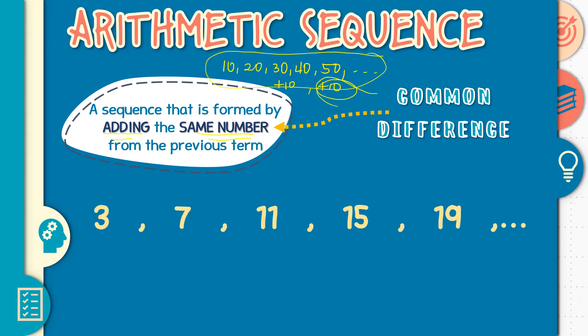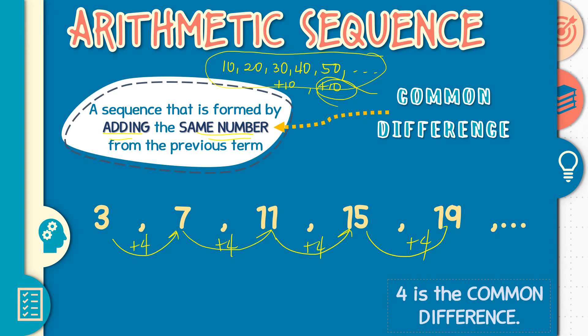Another example. Suppose we have this sequence: 3, 7, 11, 15, 19. Paano naging 7 si 3? Yes, plus 4. 7 paano naging 11? Plus 4. Also this one plus 4, plus 4. Therefore 4 is the common difference. Yan. Yun lang sa arithmetic sequence. Basta nag-a-add ka ng same number sa bawat term, we call that as the arithmetic sequence.